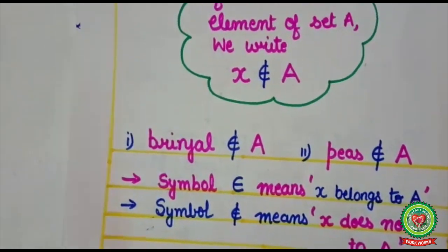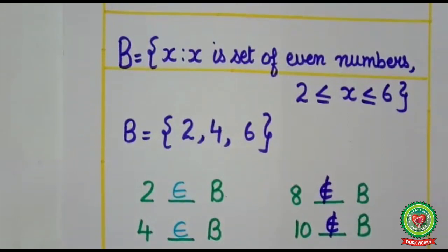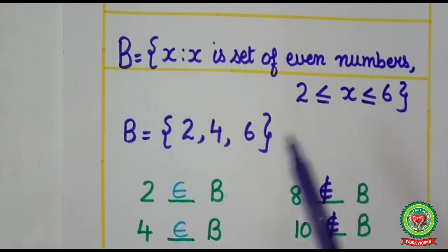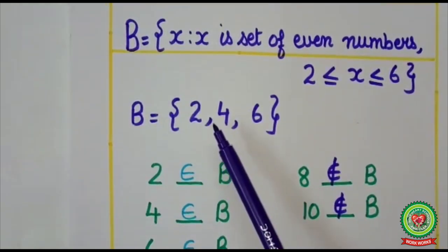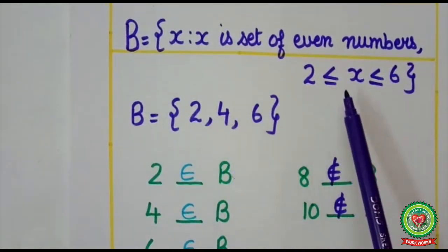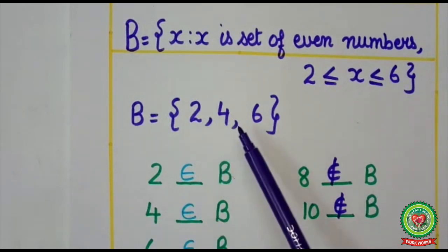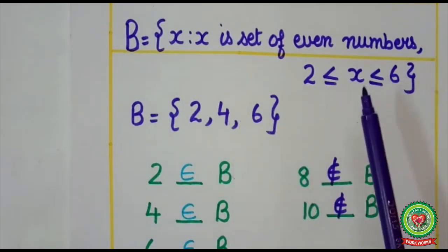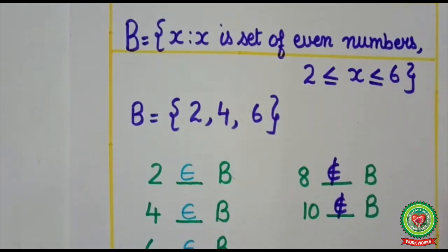Let's take one more example for the clarity of the concept. Here B = {x : x is a set of even numbers where 2 ≤ x ≤ 6}. Now this set is given in set builder form, so my priority is to change it into roster form. First of all I will write here first even number, that is 2. Why 2? Because here equals to sign is coming.